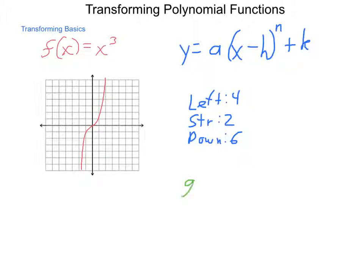we would come out with a g of x equation that is equal to 2 times x minus a negative 4, which would be x plus 4 cubed minus 6. That would put the center of our graph at negative 4, negative 6, which is here.